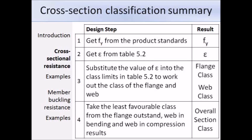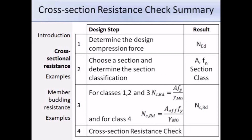Here is a summary of the design steps to work out the cross-section resistance. First, work out the design compression force, then choose a section and classify it. For classes 1, 2, and 3, the design compression resistance equals the gross area times yield strength over gamma_M0. For class 4 sections, it is the effective area times yield strength over gamma_M0. Finally, compare the design compression resistance to the design compression force.